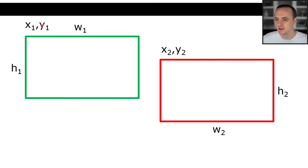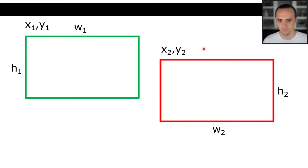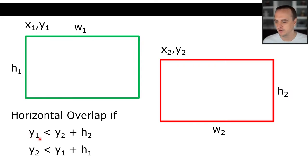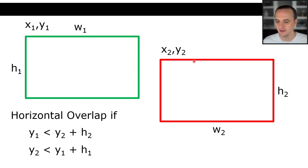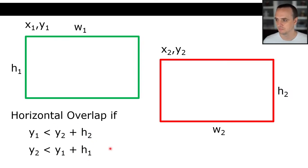If we have two rectangles specified by x1, y1 as the top-left with width and height, and x2, y2 with h2 and w2, there is a horizontal overlap if y1 (top of the green rectangle) is less than y2 plus h2, and y2 is less than y1 plus h1. That means the top of each rectangle is above the bottom of the other.